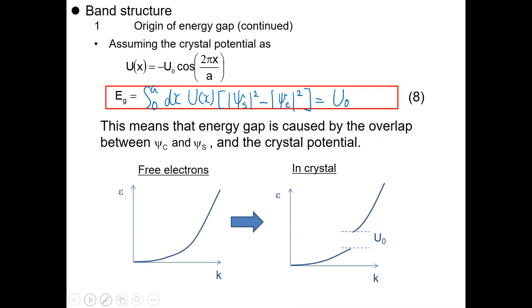As we studied in the case of free electrons, this is what we learned in the dispersion relation. In a crystal, at the position of k equal to pi over a, there's a gap for energy with a value of U0. This energy gap is called the band gap.